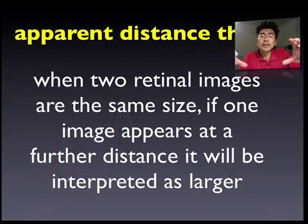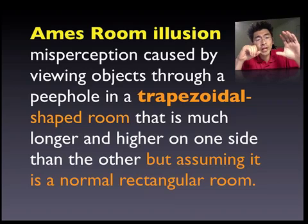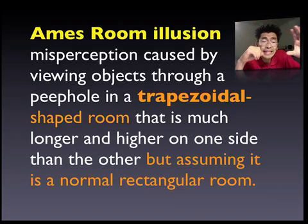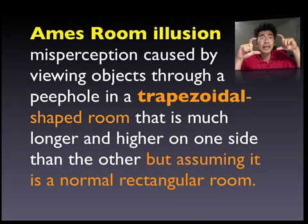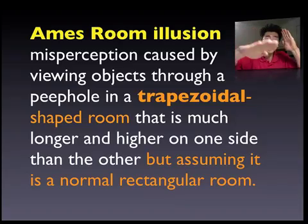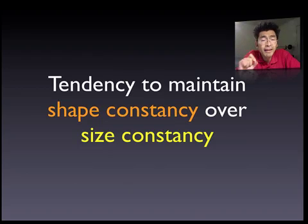In the context of the Ames Room illusion, the misperception is caused by viewing objects through a peephole into a trapezoid-shaped room that is much longer and higher on one side than the other, but assuming it is a normal rectangular room. One back corner is actually twice the distance away, and is higher with the floor sloping down to it. What we perceive is a rectangular room, but in reality one side is much larger than the other. This demonstrates our tendency to maintain shape constancy over size constancy.